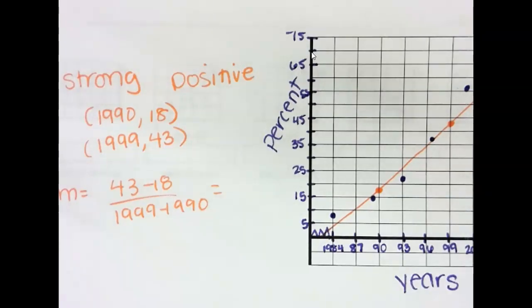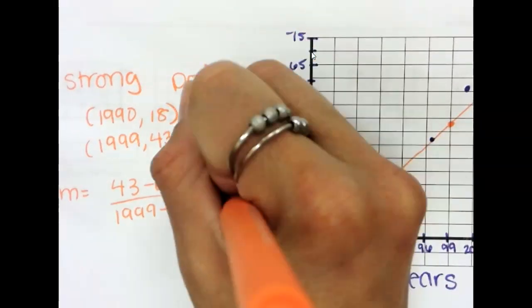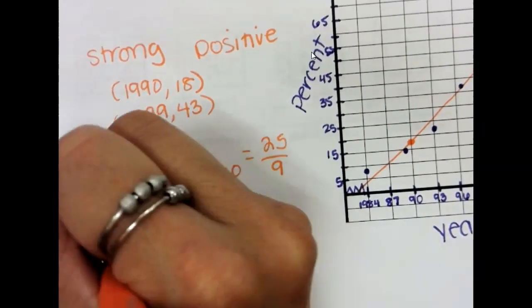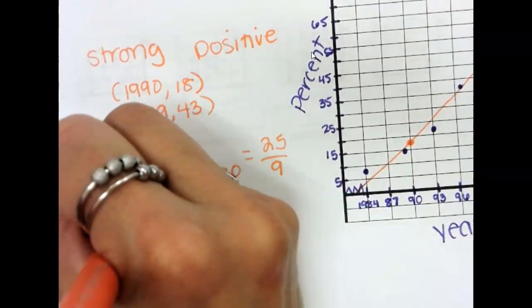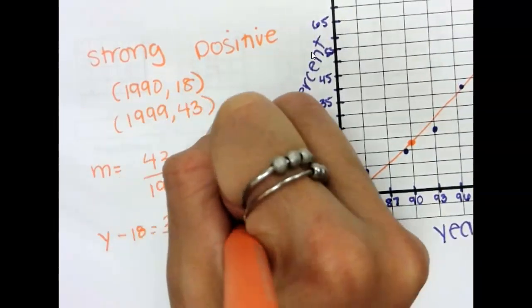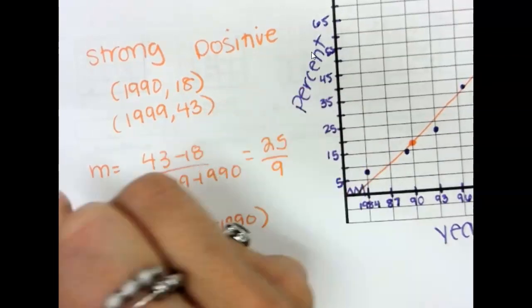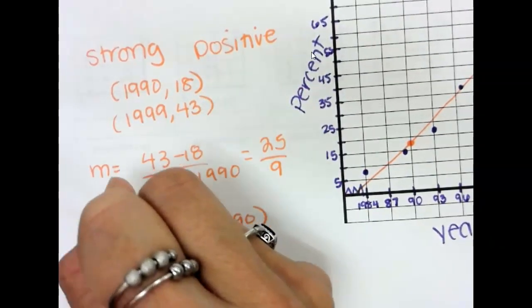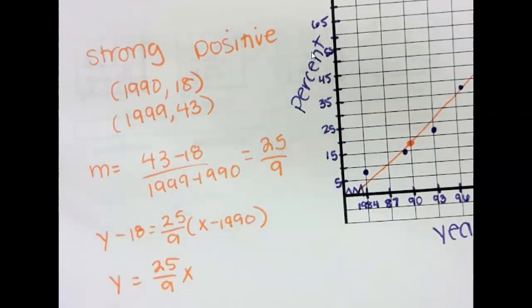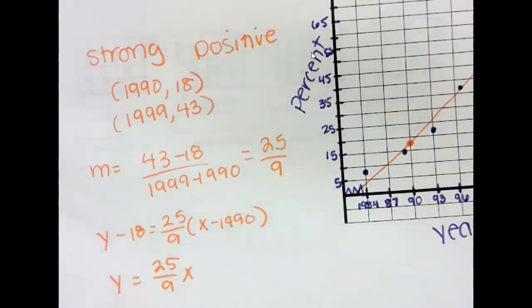And we get that that simplifies to 25 ninths. And we get that that simplifies to 25 ninths. Equals 25 ninths x minus 1990. And then simplifying, you get 25 ninths x times negative 1990 plus 18.